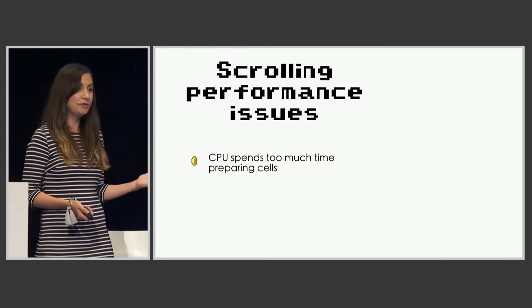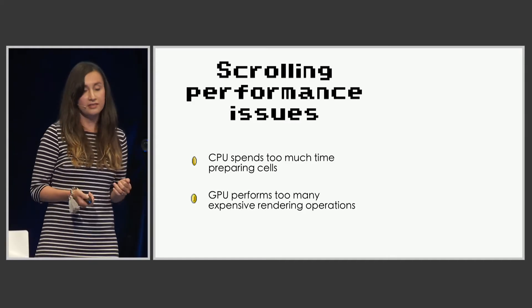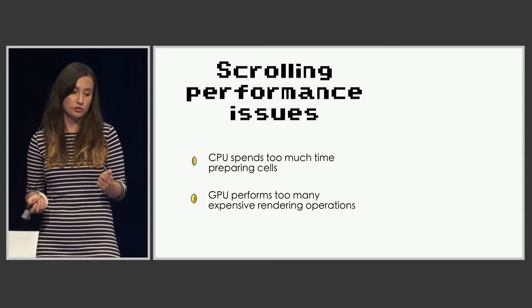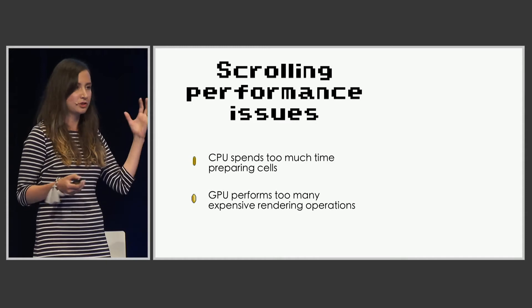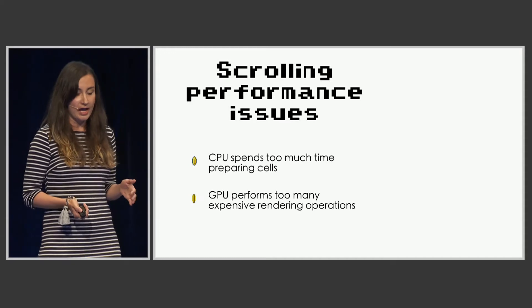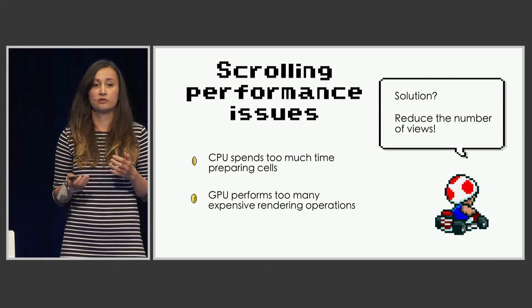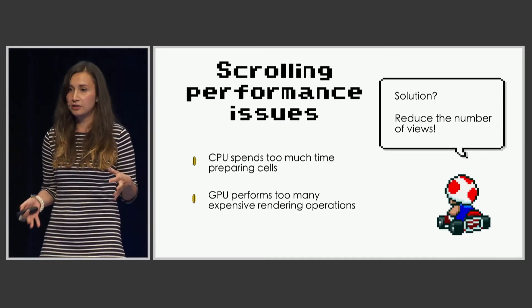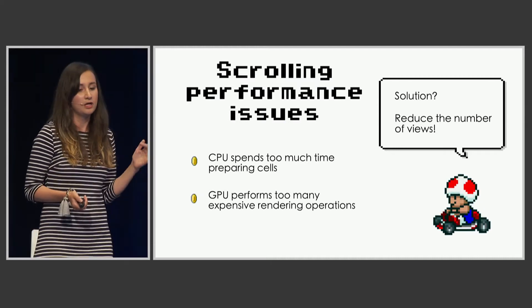There are two reasons why you could be experiencing performance issues: either the CPU is spending too much time preparing cells and doing layouts, or the GPU has to perform too many expensive rendering operations. We will only focus on the latter. The way to mitigate the burden on the GPU is to reduce the number of subviews — to flatten your view hierarchy and have as few actual views as possible that need to be rendered.